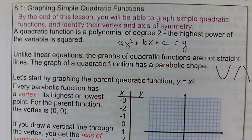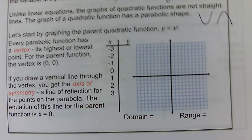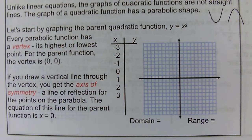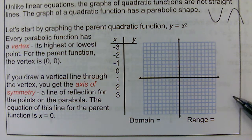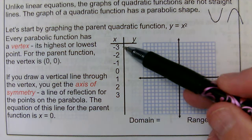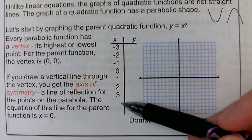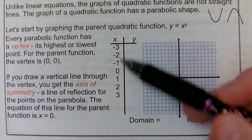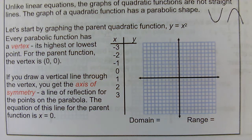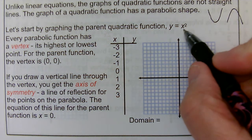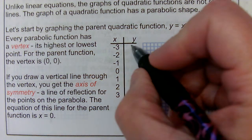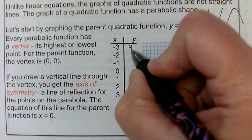We're going to start with the simplest, most basic quadratic function: y equals x squared. We're going to plug in some points — when in doubt about graphing, plug in points. I've got a table with all the numbers for x from negative 3 to 3, counting by ones. To get y, I just have to square them. So negative 3 times negative 3 is positive 9.